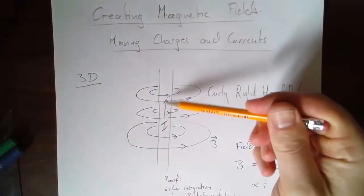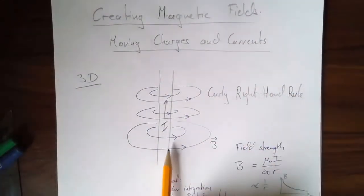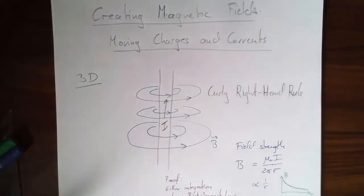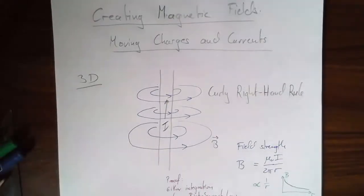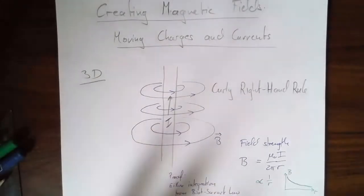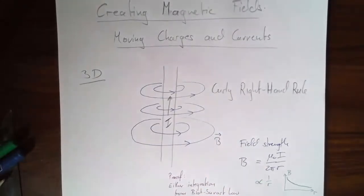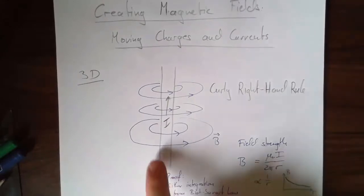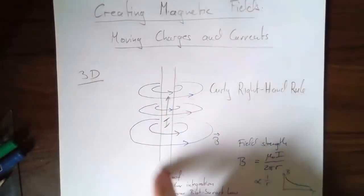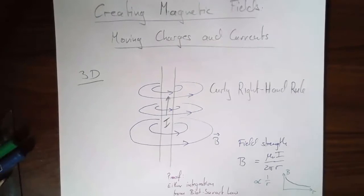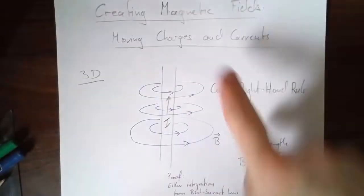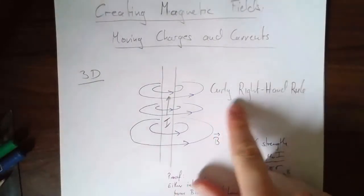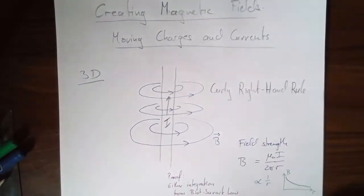Literally it means that electrons are moving down, but you can imagine positive charges going up. The magnetic field that creates — and we can for now just pretend this is an experimentally established fact, which it is — looks like this. The field lines sort of curl around the wire. Which way do they curl? That's given by what I'm going to call the curly right-hand rule.